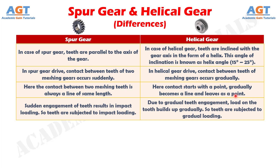Difference number 4: In spur gear drive, sudden engagement of teeth results in impact loading, so teeth are subjected to impact loading, whereas in helical gear drive, due to gradual teeth engagement, load on the tooth builds up gradually. So teeth are subjected to gradual loading.